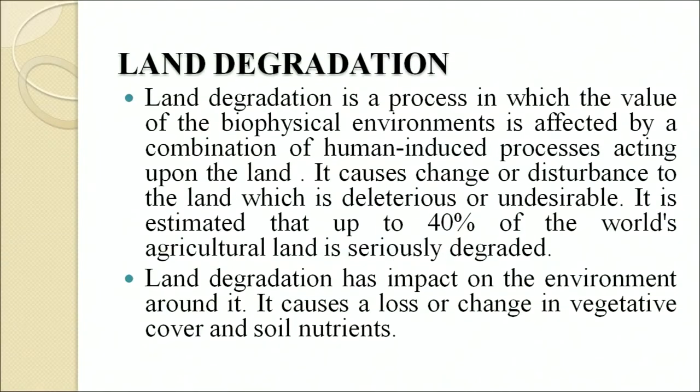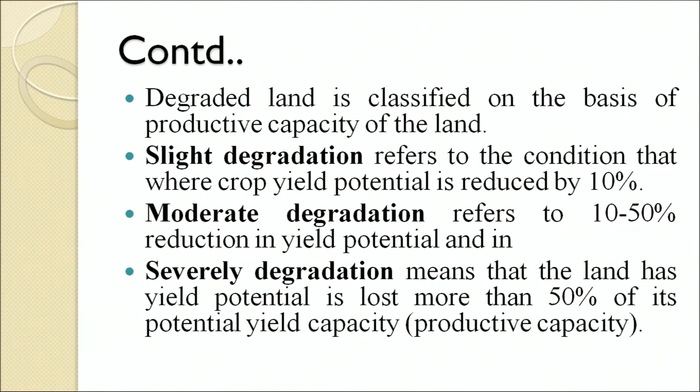Land degradation is a process in which the value of the biophysical environment is affected by the combination of human-induced processes acting upon the land. It causes undesirable change or disturbance to the land. It is estimated that up to 40 percent of the world's agricultural land is seriously degraded. Degraded land is classified by productive capacity: slight degradation refers to crop yield potential reduced by 10 percent; moderate degradation refers to 10–50 percent reduction; and severe degradation means yield potential is lost by more than 50 percent.